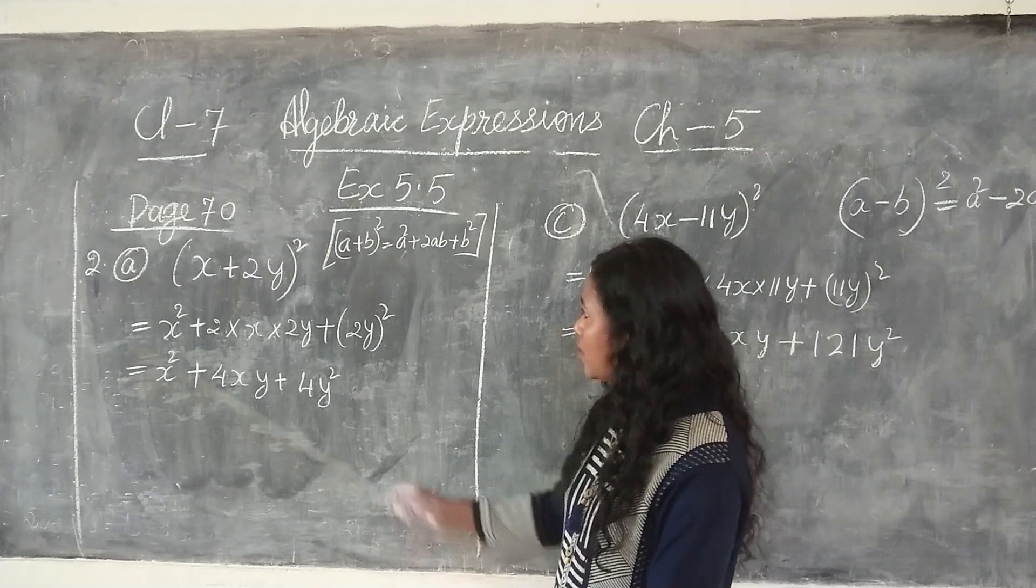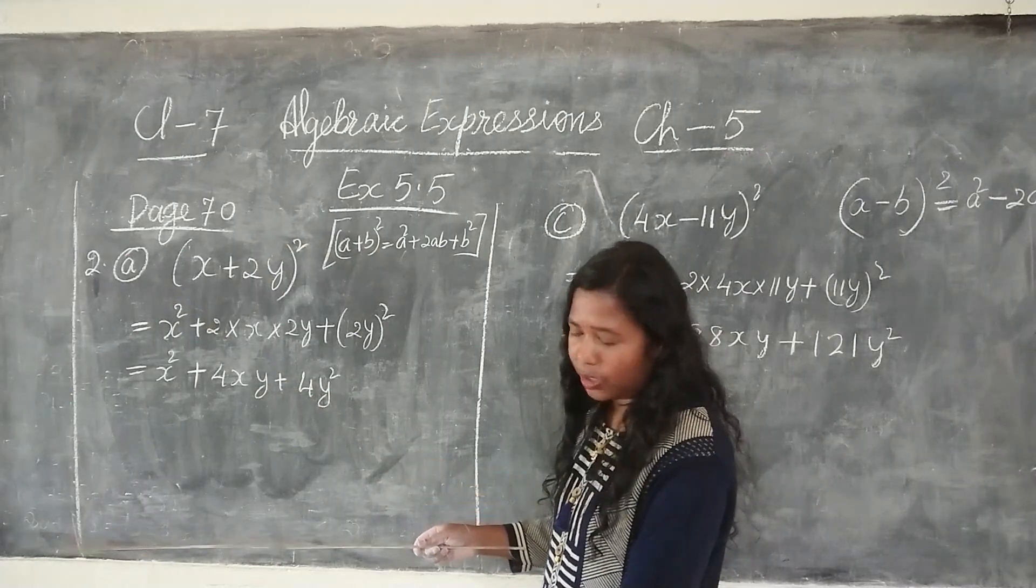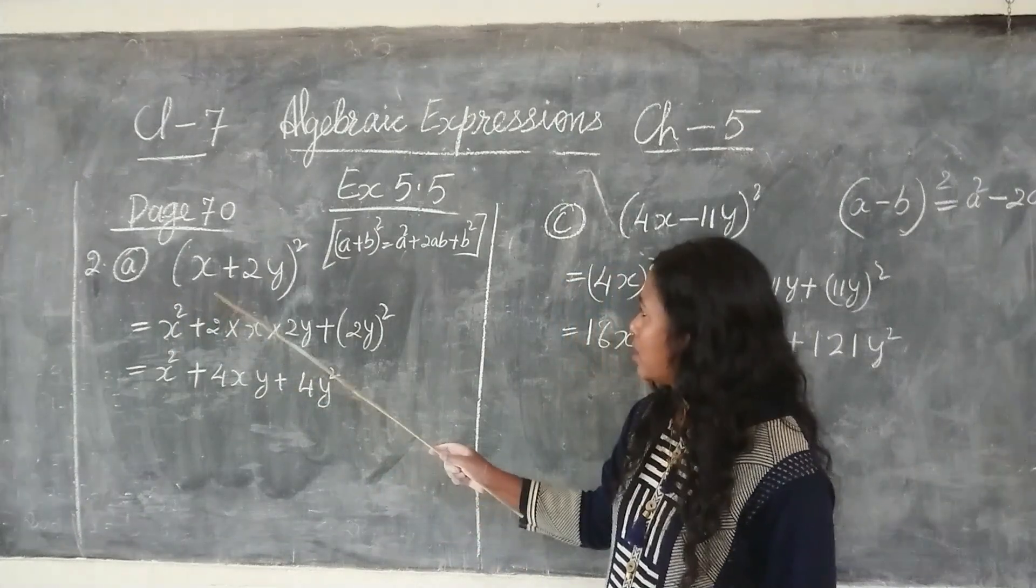Now let us see question number 2. Find the square of here, x plus 2y.